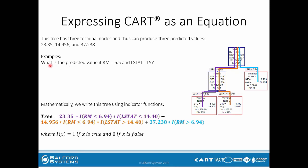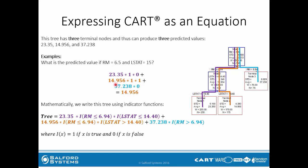Let's go through the example one more time. What is the predicted value if RM equals 6.5 and LSTAT equals 15? The first piece is 23.35. Since 6.5 is less than or equal to 6.94, we have a 1. But LSTAT of 15 is not less than or equal to 14.4, so we get a 0, making that term 0. For the second piece, 14.956: 6.5 satisfies RM ≤ 6.94, giving 1, and 15 is greater than 14.4, giving 1 — so that term is 14.956. For the third piece, 37.238: 6.5 is not greater than 6.94, so we get a 0. Our final predicted value is 14.956.